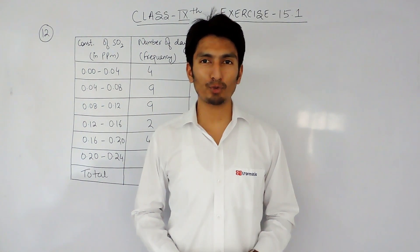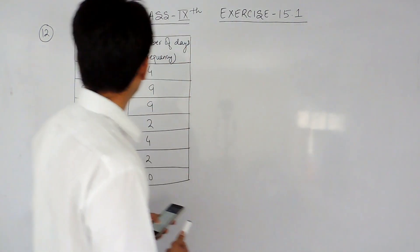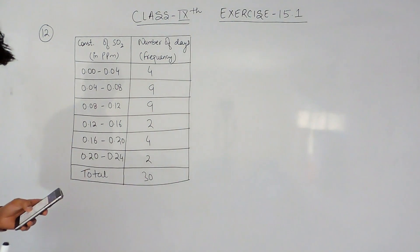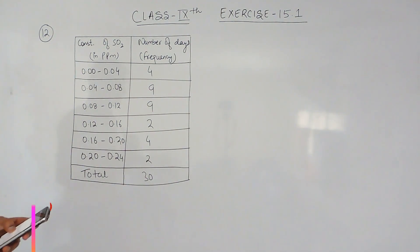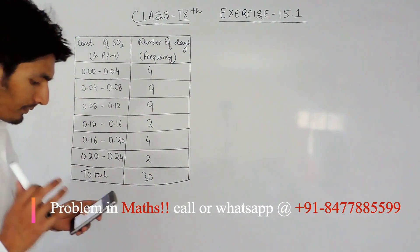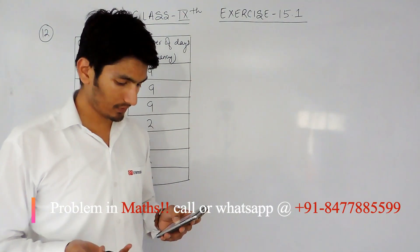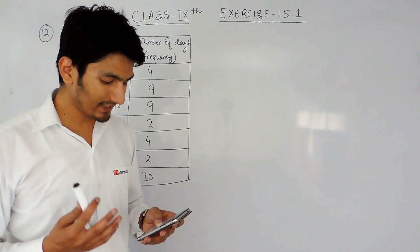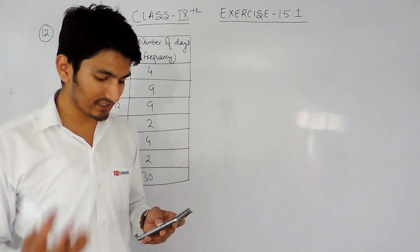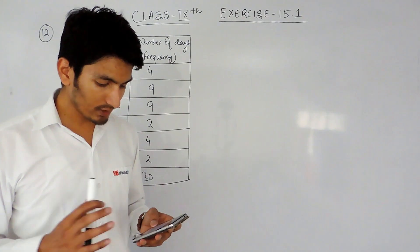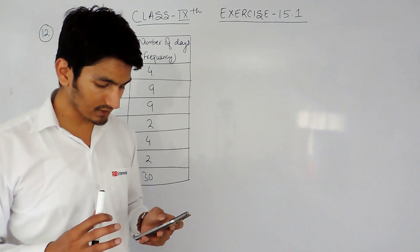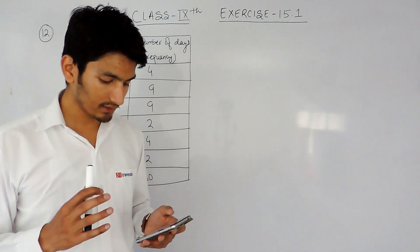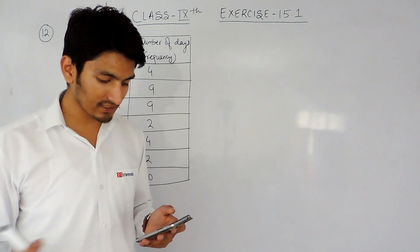Hello everyone, we are from True Maths and in this video we are going to solve question number 12, exercise 15.1. The question says: in question number 5, exercise 14.2, you were asked to prepare a frequency distribution table regarding the concentration of sulfur dioxide (SO₂) in the air in parts per million of a certain city for 30 days. Using this table, find the probability of the concentration of SO₂ in the interval 0.12 to 0.16 on any of these days.